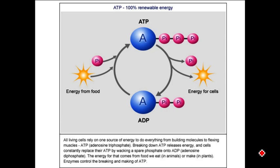Here's another way to show that. Pi is the same as a phosphate group. You have ATP releases energy for cells, you generate ADP plus a phosphate group, you get your energy from food, add that phosphate group back on, and you're back to ATP.